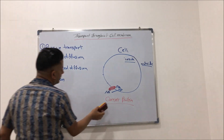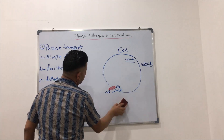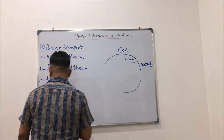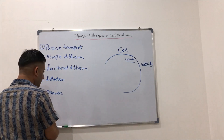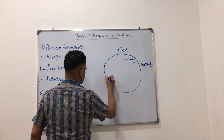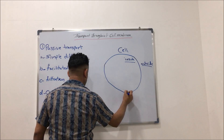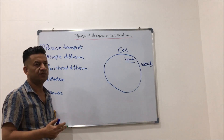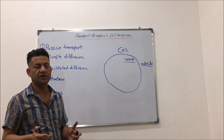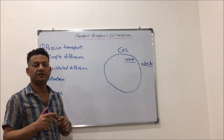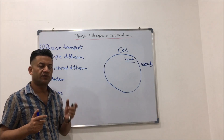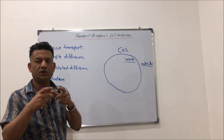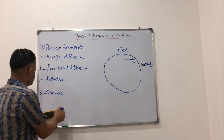Now let's speak about filtration, another example of passive diffusion. Filtration is a type of passive diffusion and it occurs usually in the renal glomeruli and renal nephrons, depending upon the pores on renal tubules and specifically on the pores of the glomeruli.